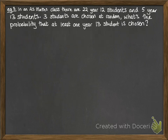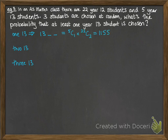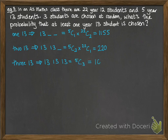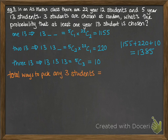Last example: an AS Maths class with 22 Year 12 students and five Year 13 students. Three students are chosen at random. What's the probability that at least one Year 13 student is chosen? One approach: consider one, two, or three Year 13s separately. One Year 13 is five choose one times 22 choose two; two Year 13s is five choose two times 22 choose one; three Year 13s is five choose three. These combinations use order-independent selections, so we use combinations not permutations. The total of the favourable outcomes is 1,385.